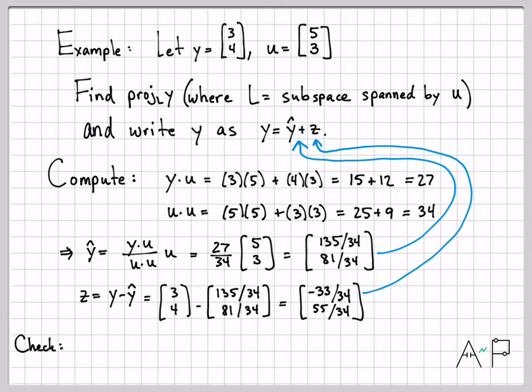So now I have my ŷ, I have my z. Let's come back and check and make sure that this error vector z is indeed orthogonal to ŷ. And ŷ is in the direction of u, so if it's orthogonal to ŷ it's also orthogonal to u. So really you could do either: dot z with ŷ or dot z with u. You're going to get zero. So let's go ahead and dot these two things together - there's my ŷ dotted with z.